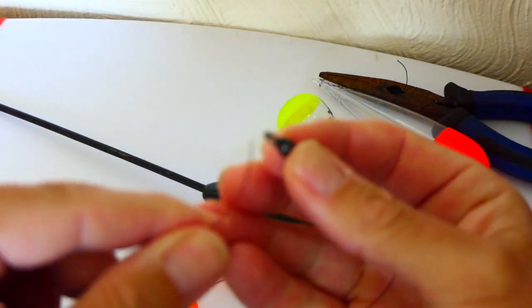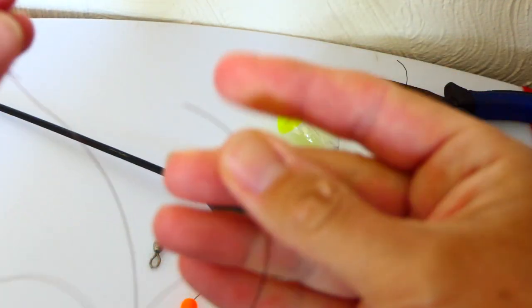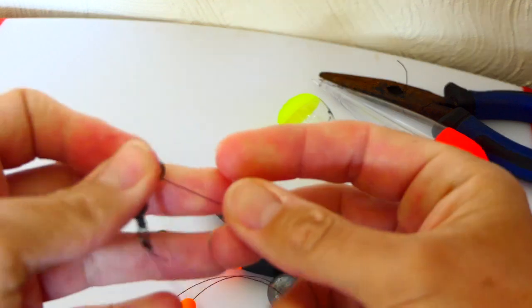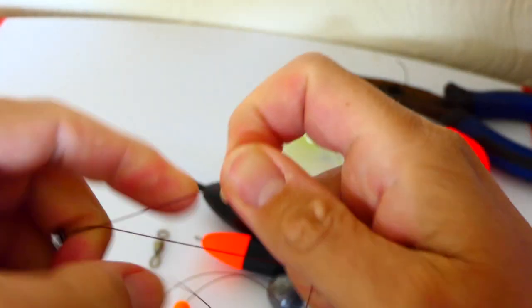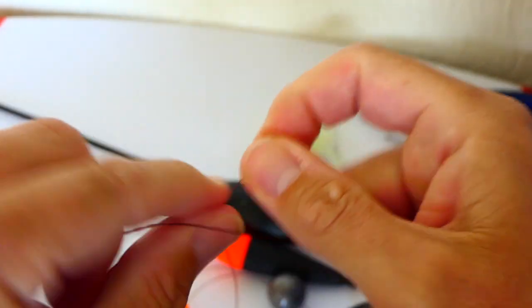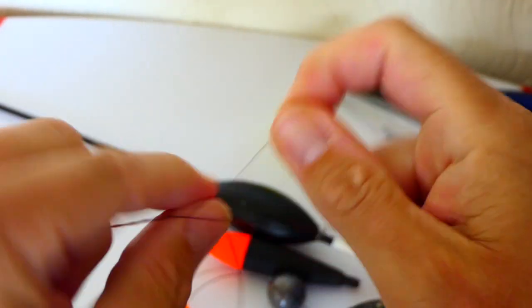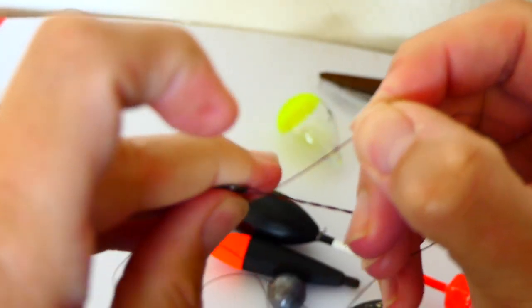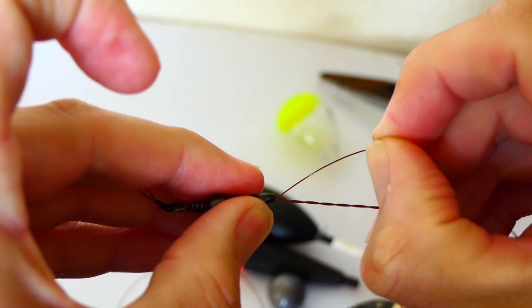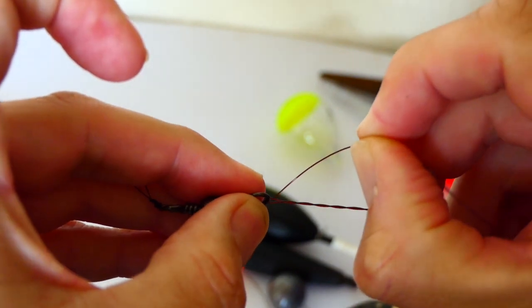Okay, some different floats there in the background. So here we're tying the hook link now onto the actual swivel. Hook link goes on exactly the same knot, double grinner you could call it that.